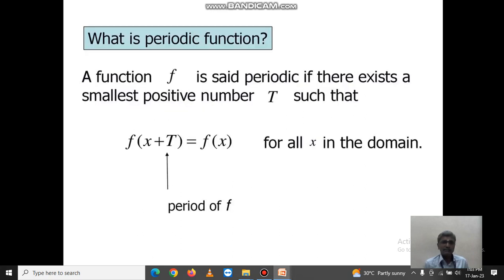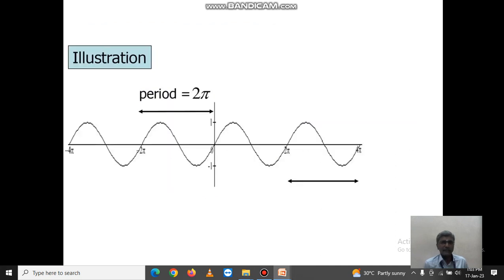The very first one: what is meant by a periodic function? A function f is said to be periodic if there exists a smallest positive number capital T such that f(x + T) = f(x) for all x in the domain. So this is the example when period equals 2π, and we have the curve minus 4π to plus 4π.